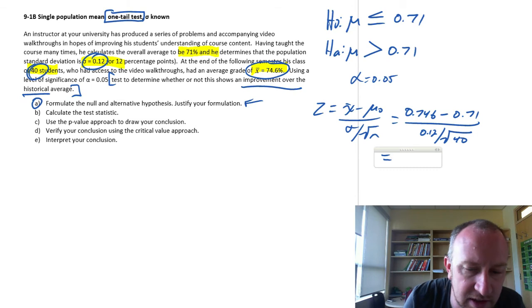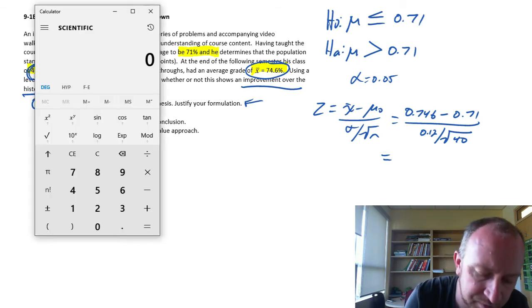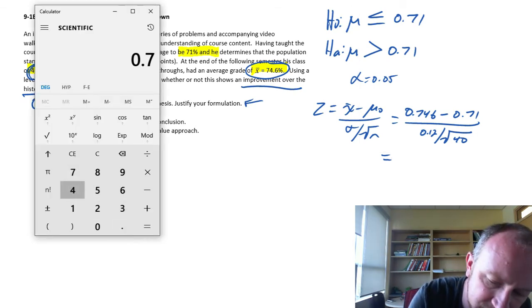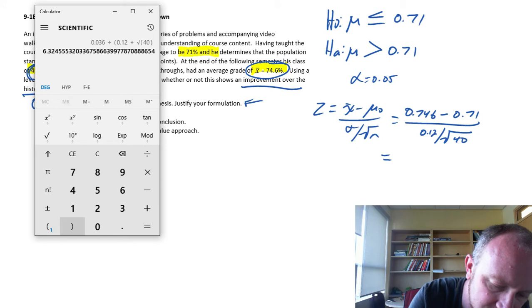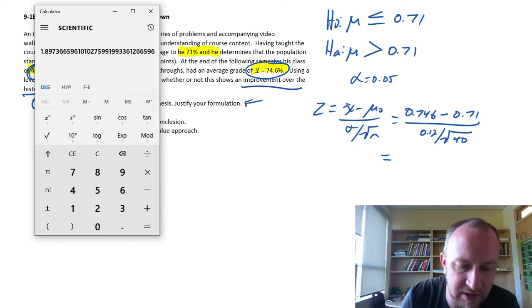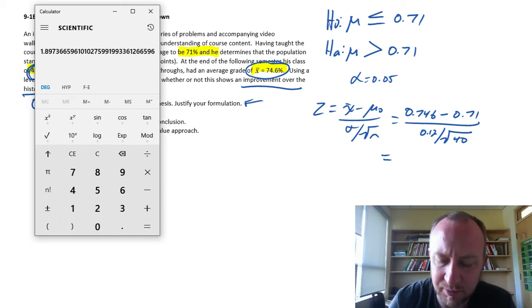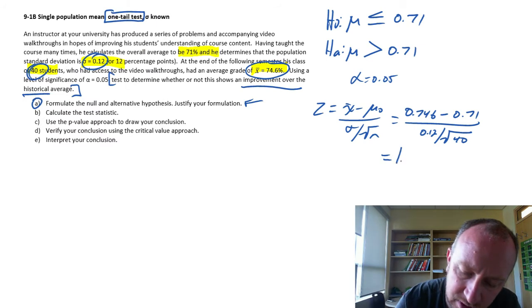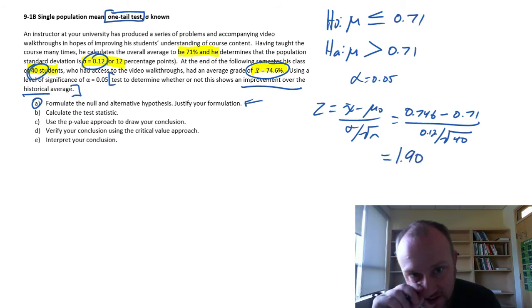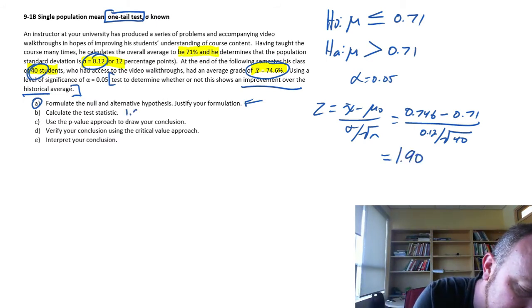And here's that standard deviation, 0.12 divided by the square root of we have 40. Let's get that calculator out. 0.746 minus 0.71 divided by 0.12 over root 40. Close that bracket, equal and I get, let's round that to about 1.9. So there's our test statistic: 1.90.